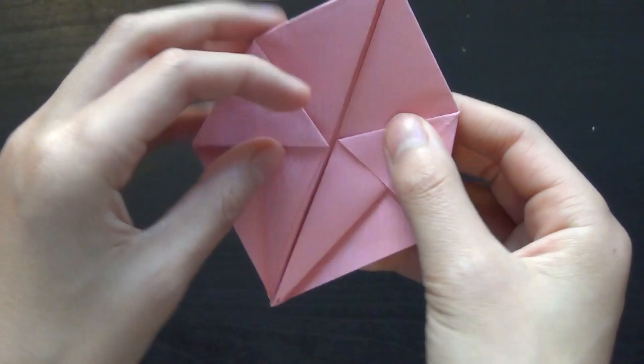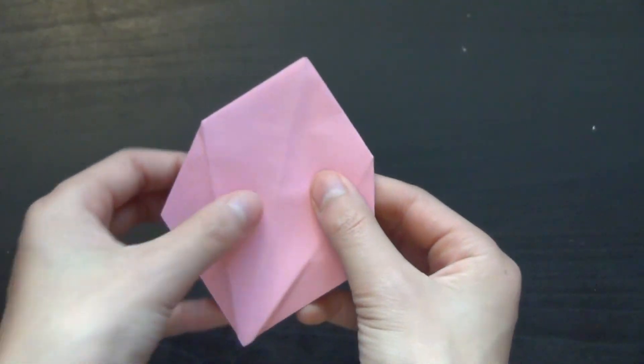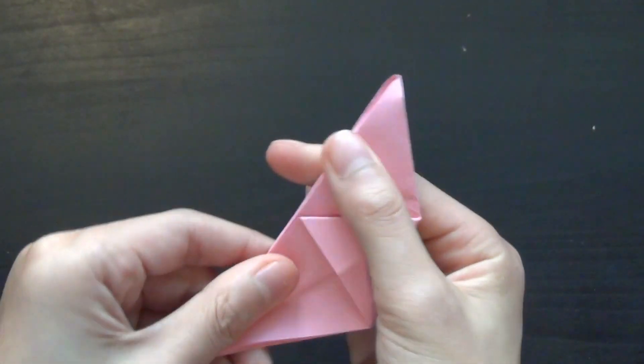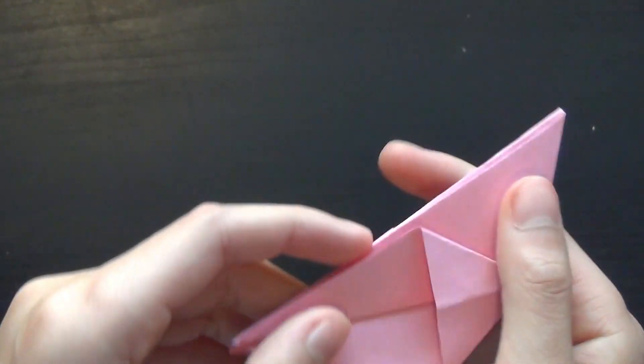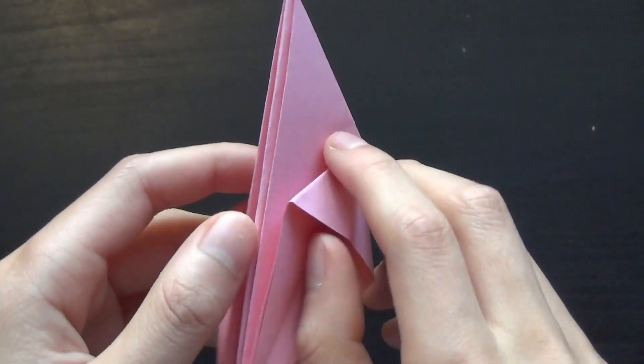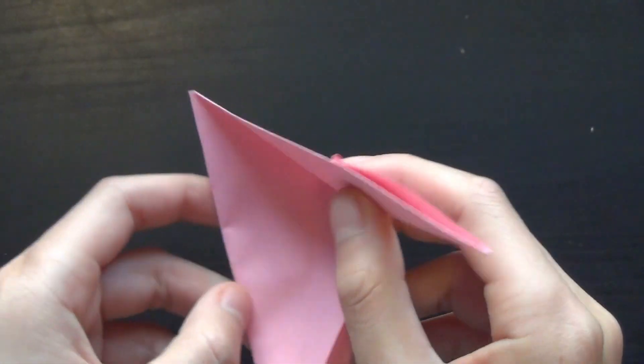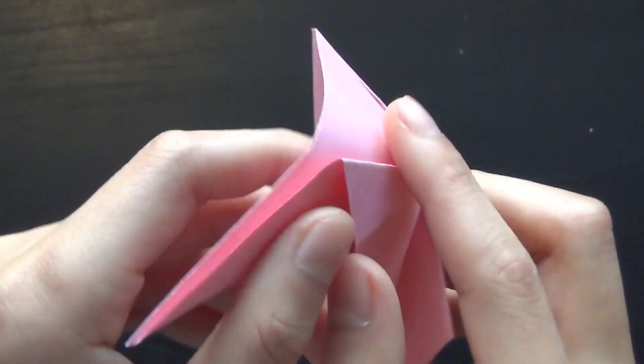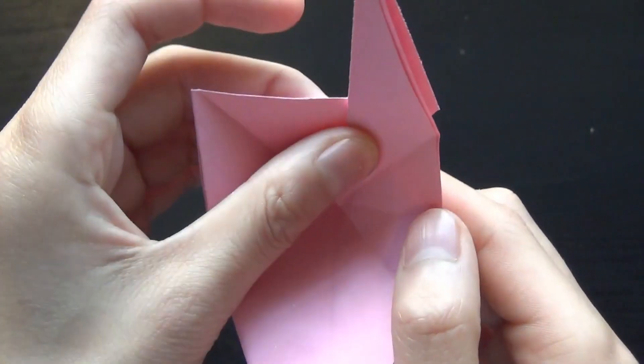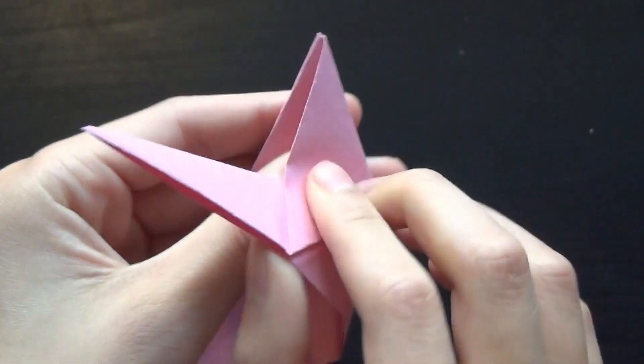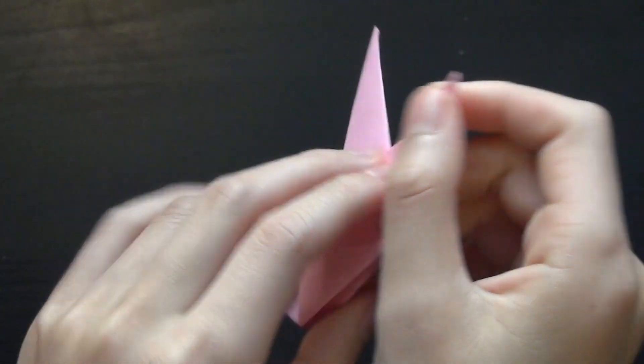Now you want to flip it around and fold it in half. After that, take this and open it up. After opening it up, take this flap right here and fold it across like that, and do the same thing with the other side.